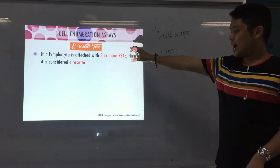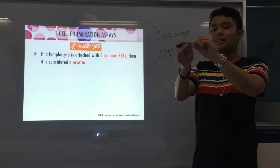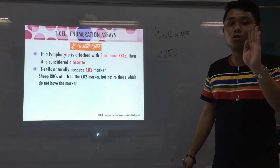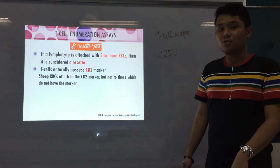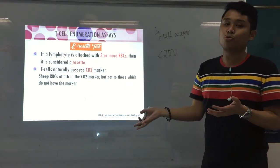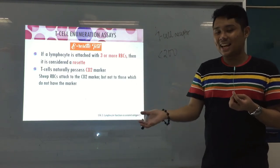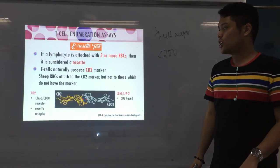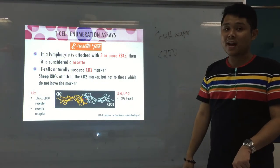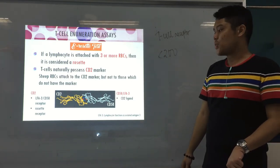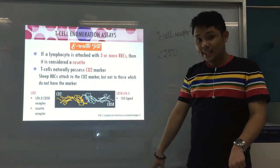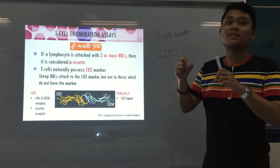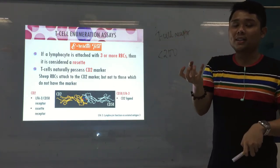If a lymphocyte is attached with three or more RBCs around it, that is called a rosette. T-cells naturally possess the CD2 marker, which is the receptor that the sheep RBCs will bind to. If the cell has CD2, it is a T-cell, and the sheep RBCs will bind around it. The sheep RBCs have a receptor or ligand known as CD58, or LFA3 — Lymphocyte Function Associated Antigen 3.